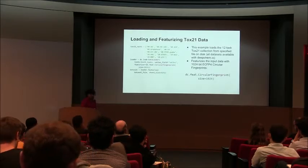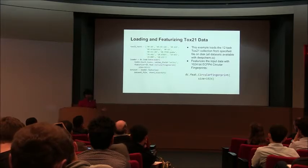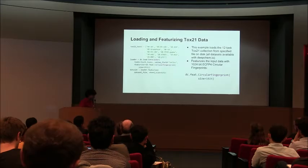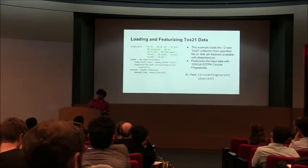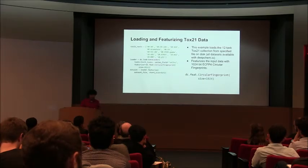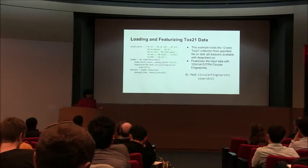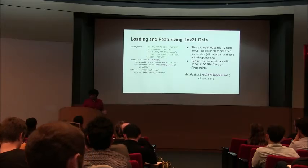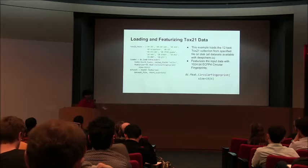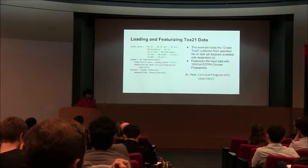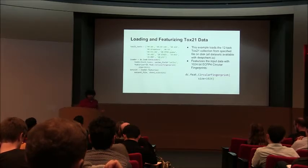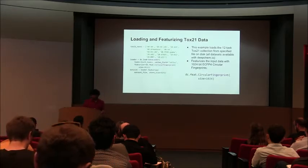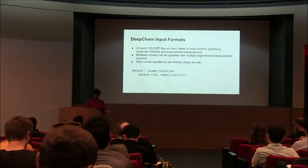The first step in any machine learning system is to take input data and featurize it — transform the input into a format convenient for these deep models to understand. Pharma likes Excel spreadsheets, so if someone has a spreadsheet with a list of compounds and experimental output, we handle that. These few lines of code say: get a data loader, load up the data, specify a featurizer, featurize the data, and you're done. It's about 10 lines of code to process input in the standard format you'd see in a pharmaceutical application. We accept CSV files.